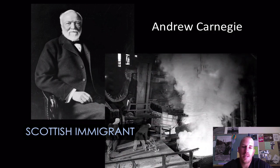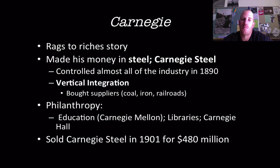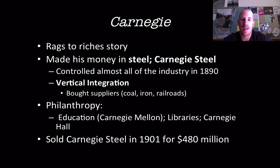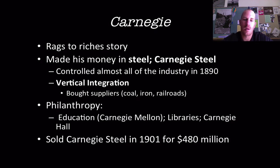The next industrialist is Andrew Carnegie, an immigrant who came to America very poor — a true rags-to-riches story. He worked odd jobs from a very young age but made his fortune in steel using the Bessemer process. By 1890, his company controlled almost the entire steel industry through a process known as vertical integration — buying up suppliers such as coal mines, iron mines, and railroads — allowing him to ship goods at much cheaper prices while still generating enormous profit. Like Vanderbilt, Carnegie gave away much of his money, including to education — Carnegie Mellon University — libraries, and Carnegie Hall in New York City. By 1901, J.P. Morgan approached Carnegie about buying his steel business, and Carnegie ultimately sold it for $480 million.